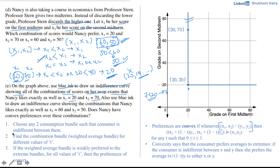Step 1: Choose two consumption bundles such that the consumer is indifferent between them — that is, two points on the same indifference curve. We choose (20, 70) and (70, 20), both lying on the same indifference curve, so Nancy is indifferent between them. Step 2: Find the weighted average bundle for different values of t in [0, 1] — joining these two points gives a straight line of weighted average bundles.